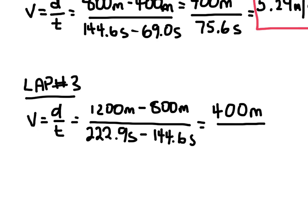So we have 400 meters, once again, divided by a time of 78.3 seconds. And so for her third lap, we have an average speed here of 5.10 meters per second.